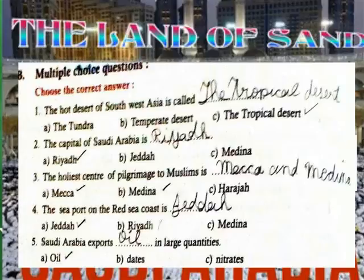The hot desert of South West Asia is called the Arabian Desert. The capital of Saudi Arabia is Riyadh. The holy center of pilgrimage for Muslims is Makkah and Madinah. The seaport on the Red Sea coast is Jeddah.